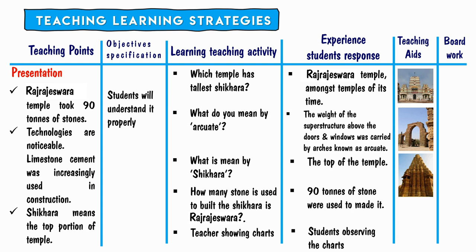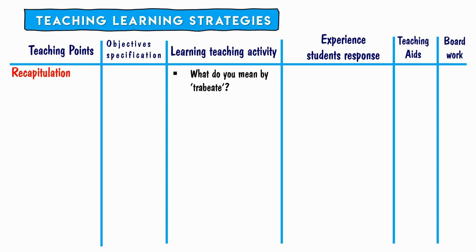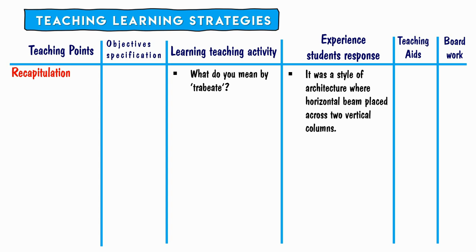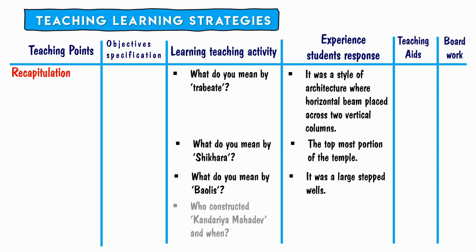The objective is that students understand the content properly and learn the skill of observing charts. The teacher does board work when needed and instructs students to note down important points in their notebooks. Recapitulation: 'What do you mean by shikhara?' — 'The topmost portion of the temple.' 'What do you mean by Baolis?' — 'Large stepped wells.' 'Who constructed Kandariya Mahadeva temple and when?' — 'It was constructed by King Dandadeva in 1025.'